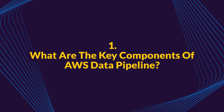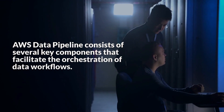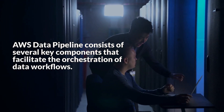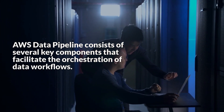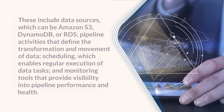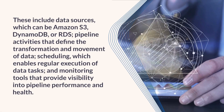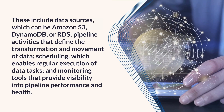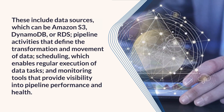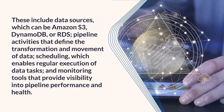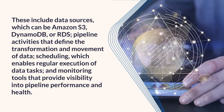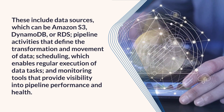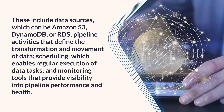Question 1: What are the key components of AWS Data Pipeline? AWS Data Pipeline consists of several key components that facilitate the orchestration of data workflows. These include data sources, which can be Amazon S3, DynamoDB, or RDS; pipeline activities that define the transformation and movement of data; scheduling, which enables regular execution of data tasks; and monitoring tools that provide visibility into pipeline performance and health.